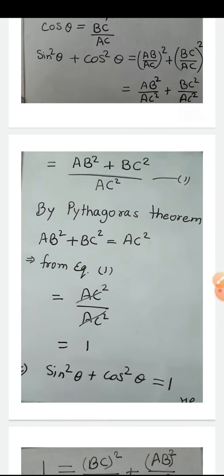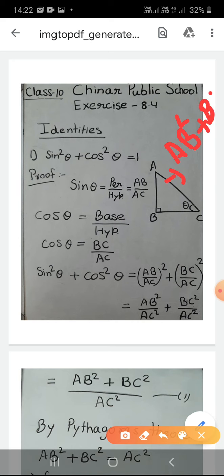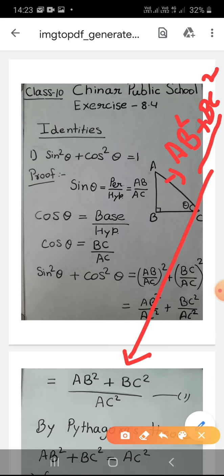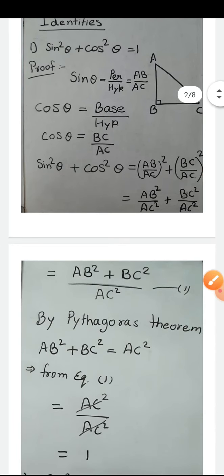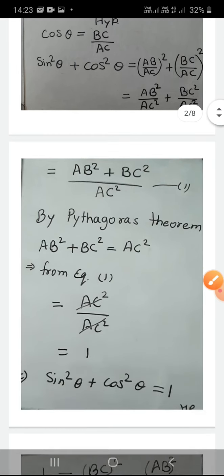Taking LCM, we get AC² in the denominator: (AB² + BC²)/AC². Now looking at the triangle, by Pythagoras theorem, the hypotenuse AC² = AB² + BC². So we replace AB² + BC² with AC², giving AC²/AC², and the two cancel out to give 1.